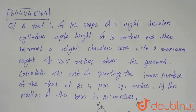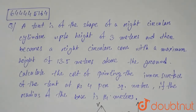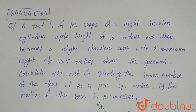Hello everyone. The question is: a tent is of the shape of a right circular cylinder up to height 3 meters and then becomes a right circular cone with a maximum height of 13.5 meters above the ground. Calculate the cost of painting the inner surface of the tent at Rs 4 per square meter, if the radius of the base is 14 meters.